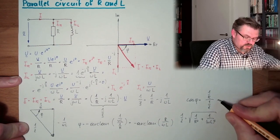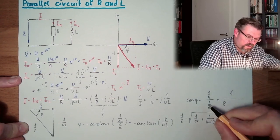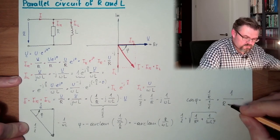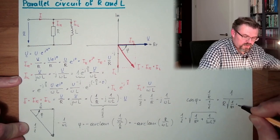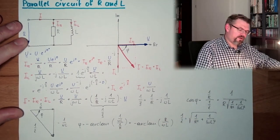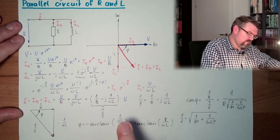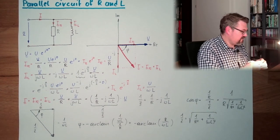So actually we are ending up by 1 divided by R, and now this stuff here, 1 divided by R squared plus 1 divided by omega L squared. Power factor, phase, impedance, everything is here.